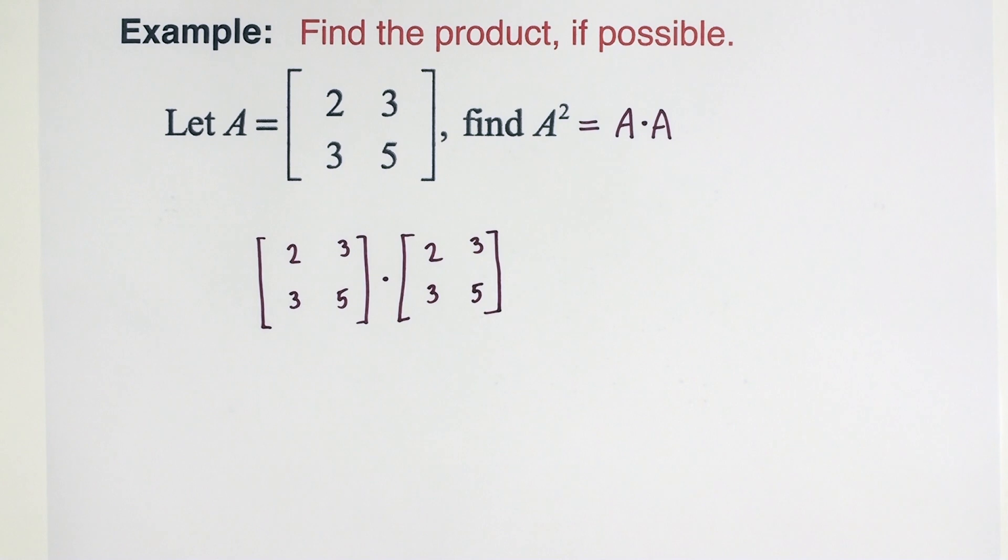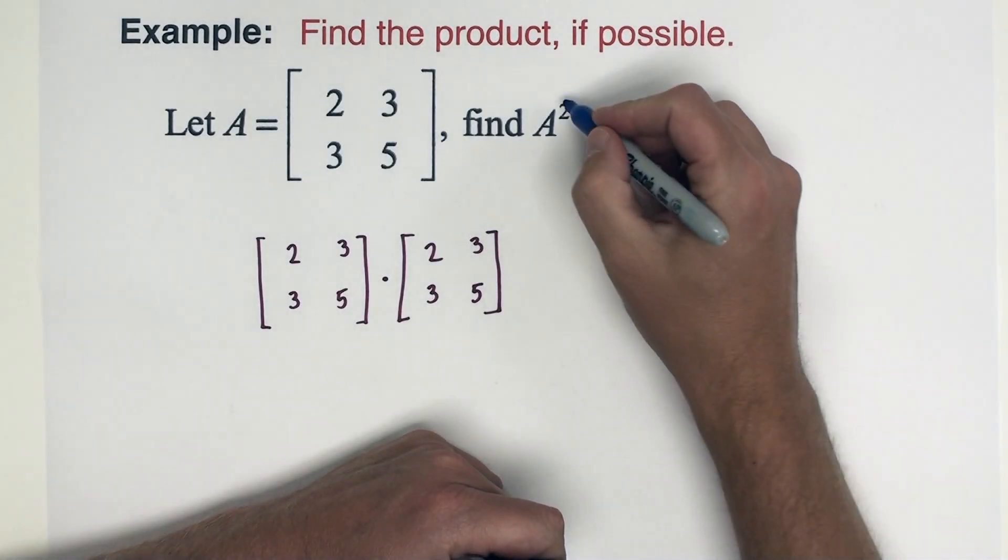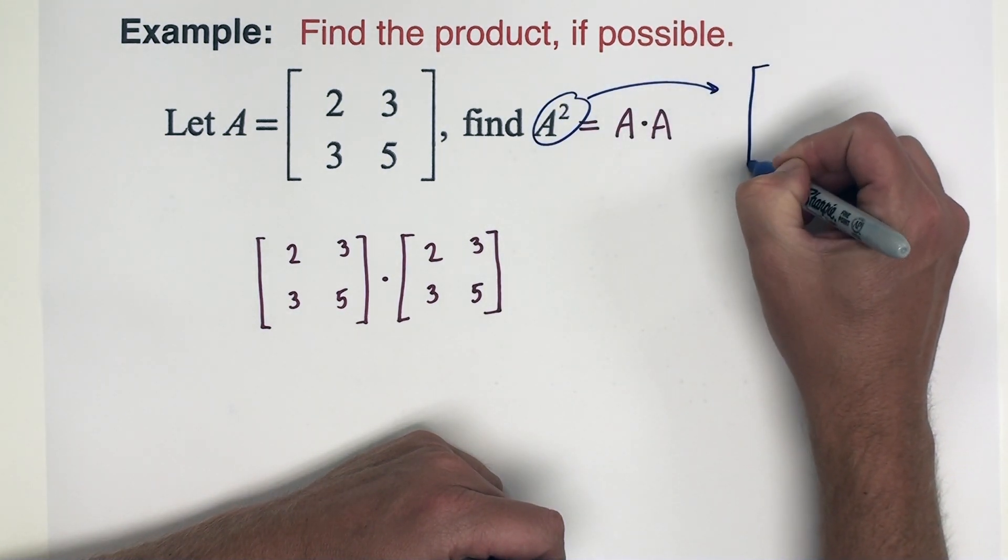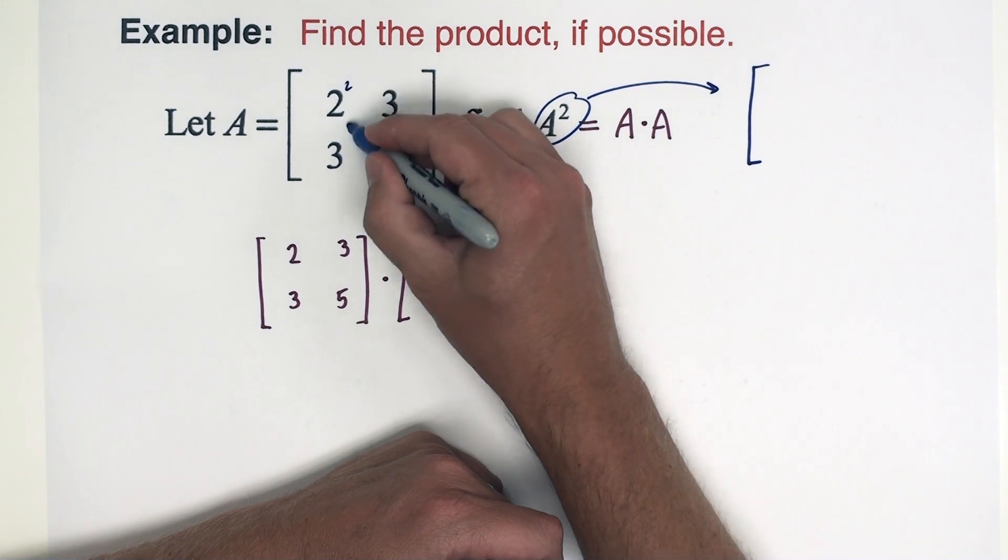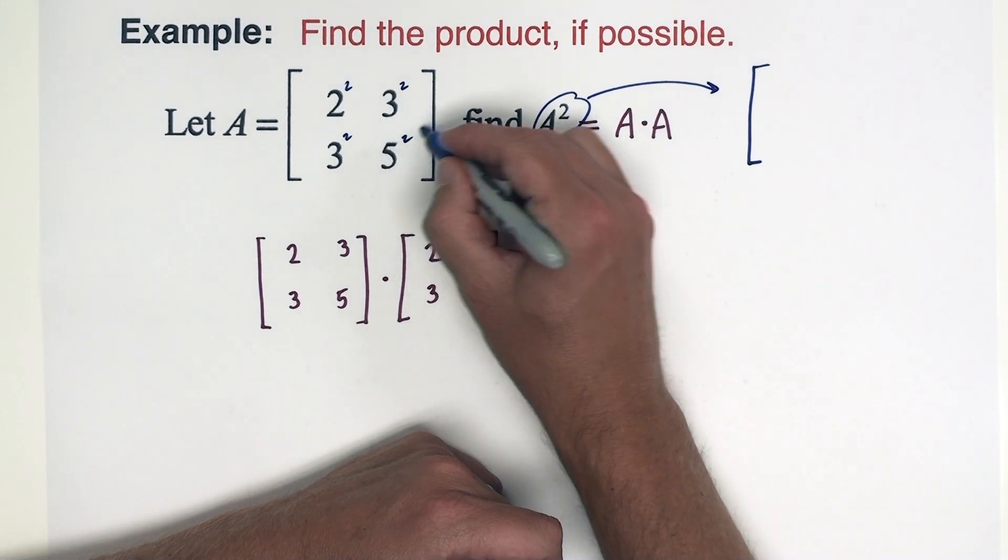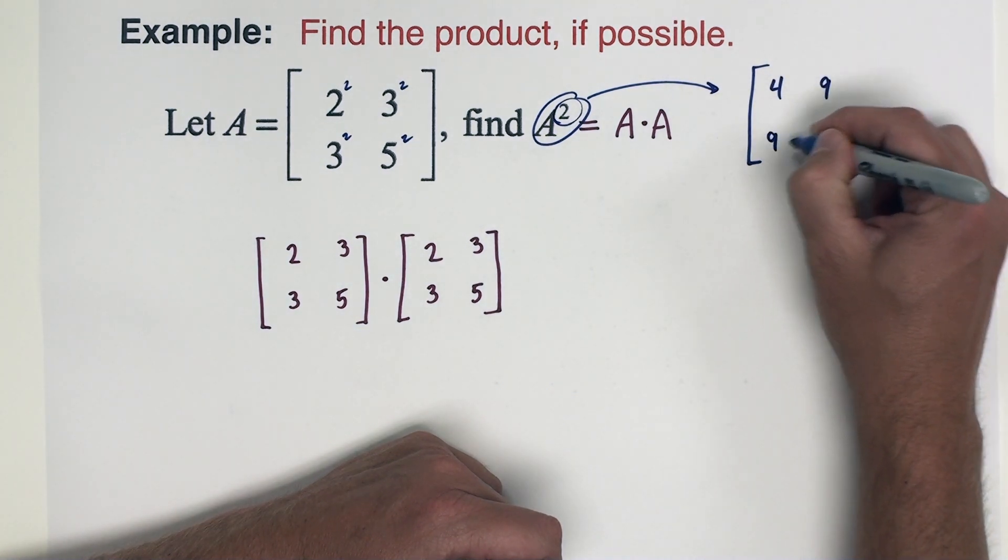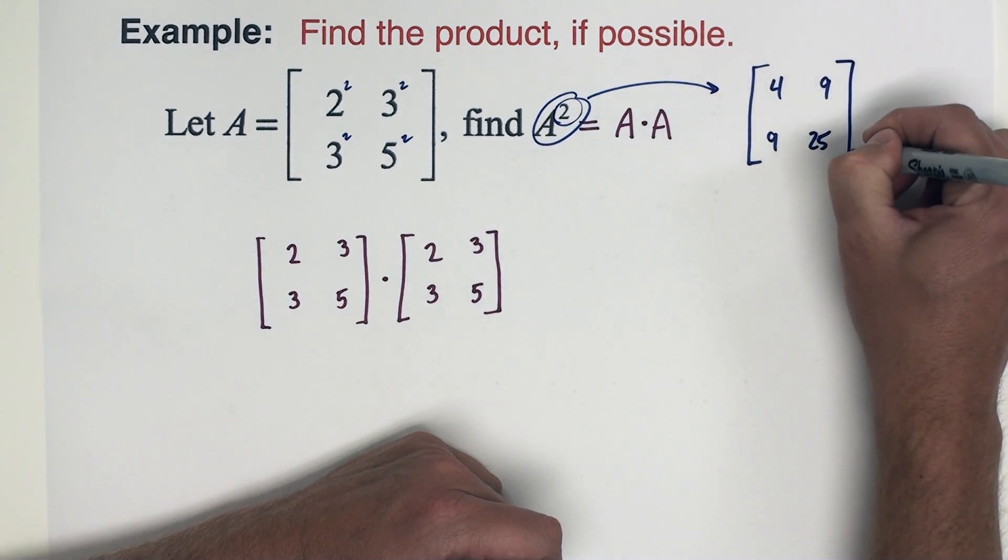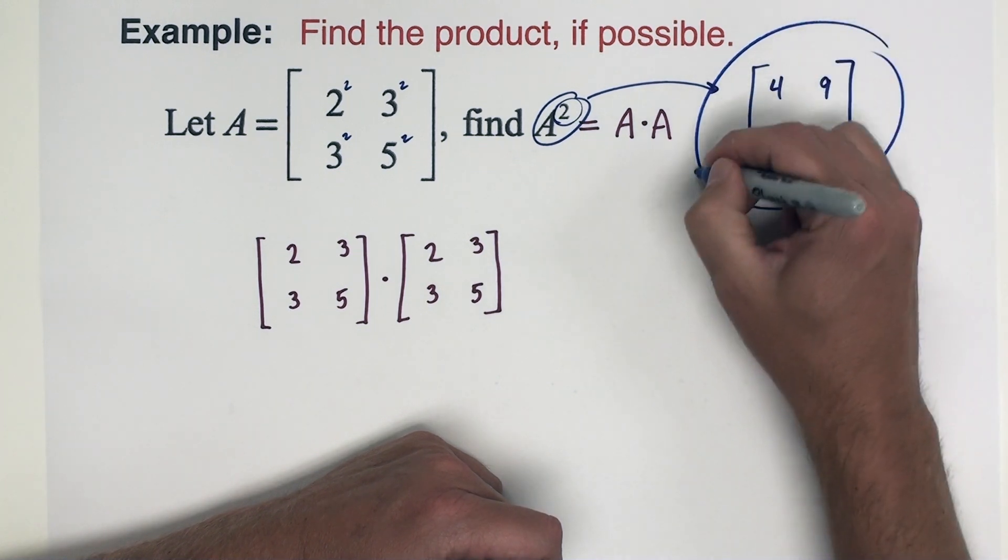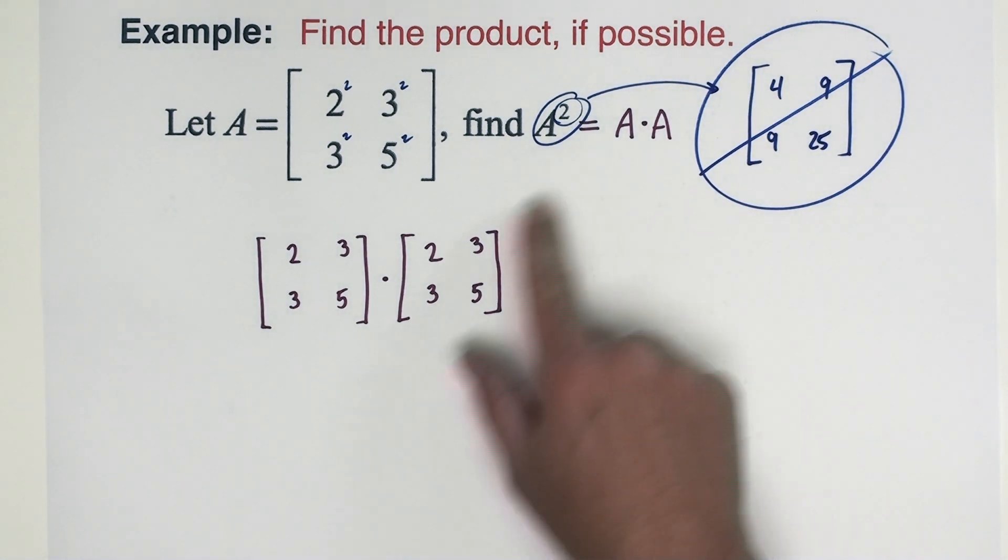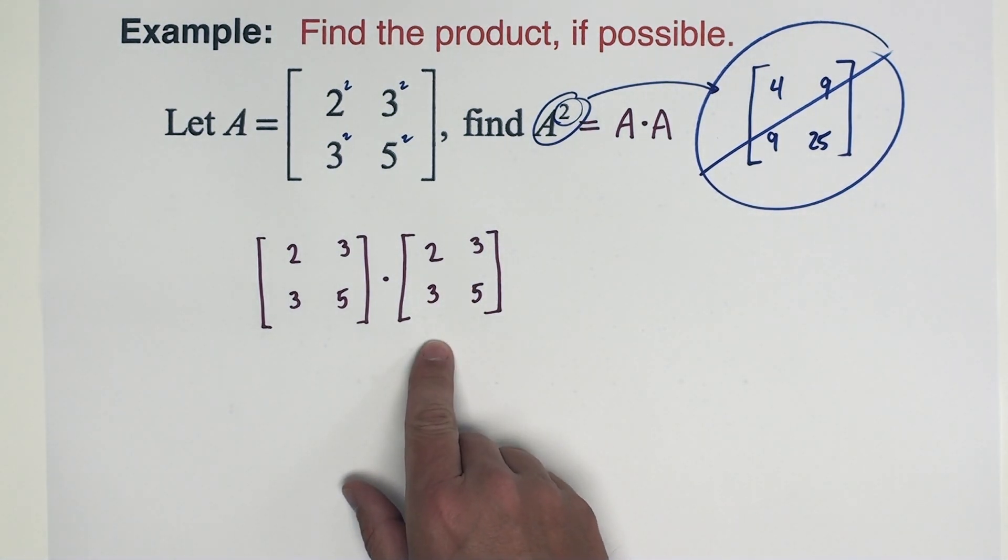Now the mistake that I see students make, and I'm going to write it out for you because it's definitely not right, the mistake I see students make is they just take matrix A and they just square all these numbers because it says squared right there. And they would say [4 9; 9 25]. That is not correct. Please do not do that. This is a product, it has to be treated like a matrix product.